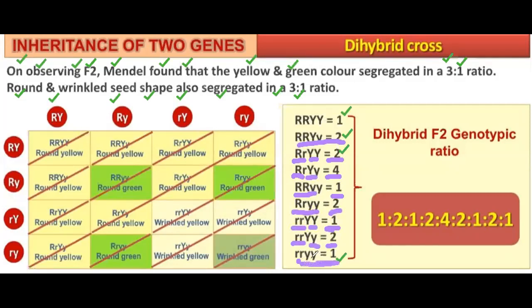So the genotypic ratio that emerges is 1:2:1, then 2:4:2, then 1:2:1. Students, remember this for MCQs — it is important. First remember 1:2:1, then 2:4:2, then 1:2:1.